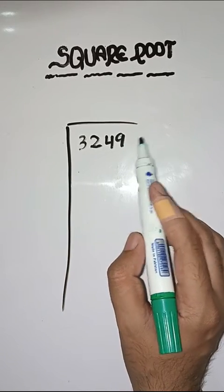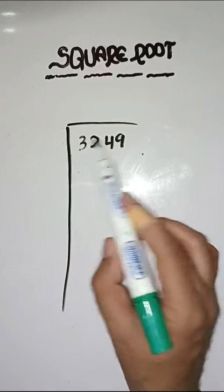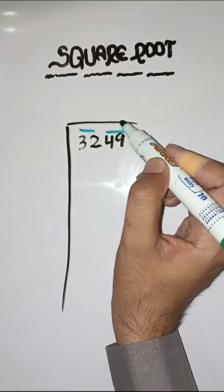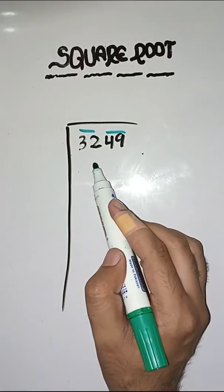So students, first step is we have to make pairs from right to left like this. First pair is of 49, next is of 32. So first we have to solve 32.